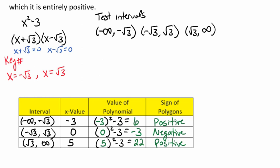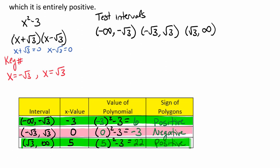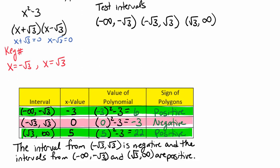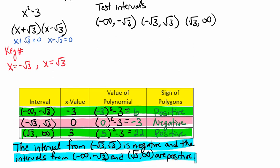The polynomial has negative values for every x in the interval from negative radical 3 to radical 3. And it is positive for every x in the intervals from negative infinity to negative radical 3, and from radical 3 to infinity.